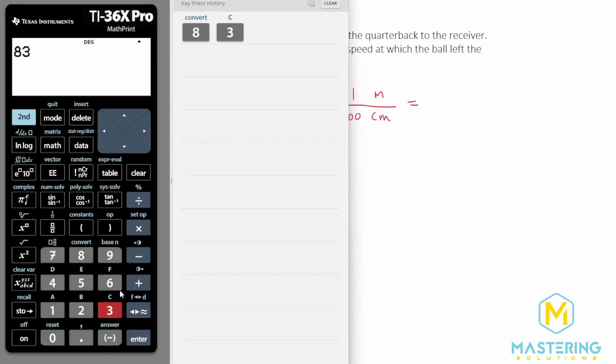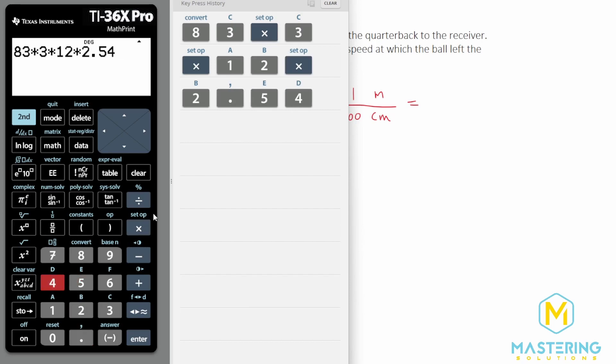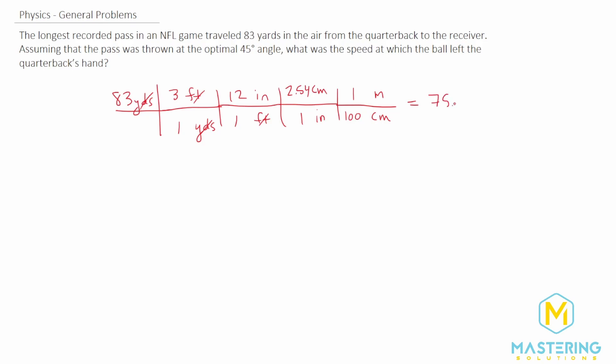So we have 83. And then we'll multiply that by 3. We'll multiply it by 12 to put us into inches. Multiply by 2.54 to put us into centimeters. And then divide by 100 to finally put us into meters. So we have 75.8952. 75.8952. I'm not going to round that. Just since it's an intermediate answer, it'll give us more precise later on.